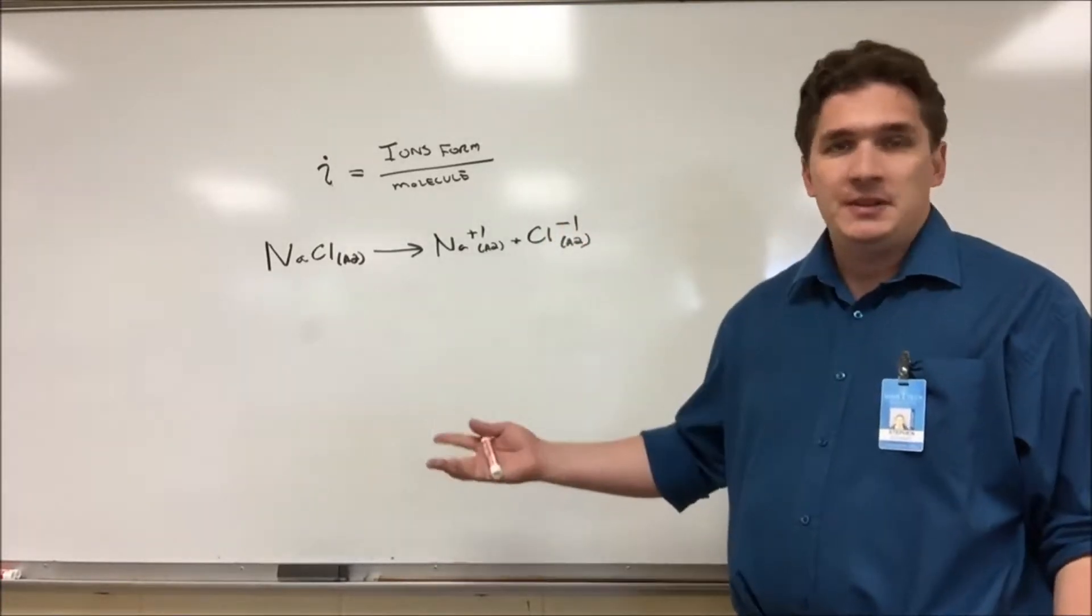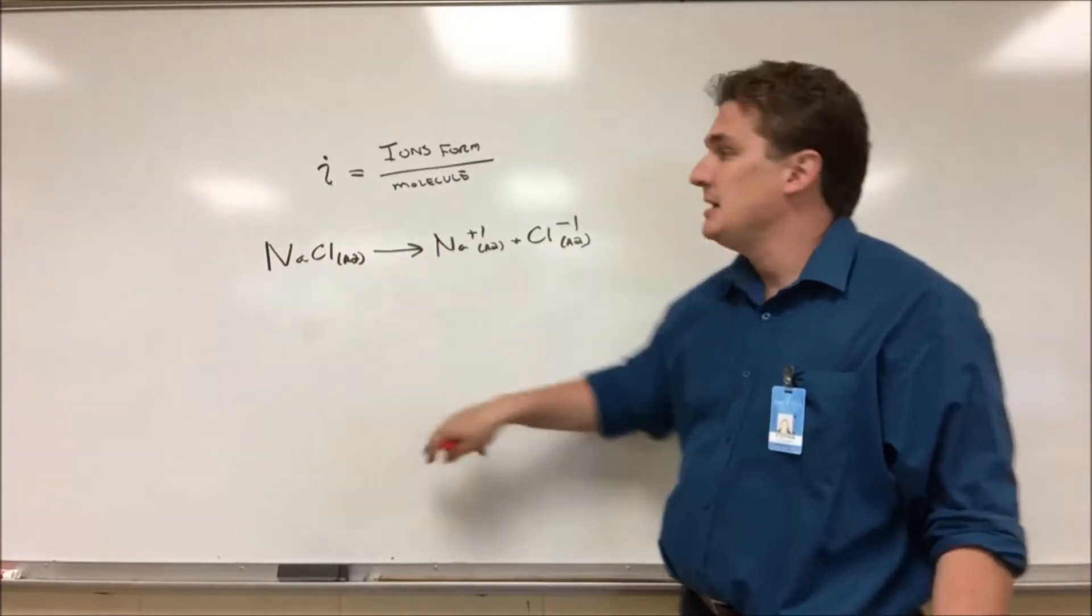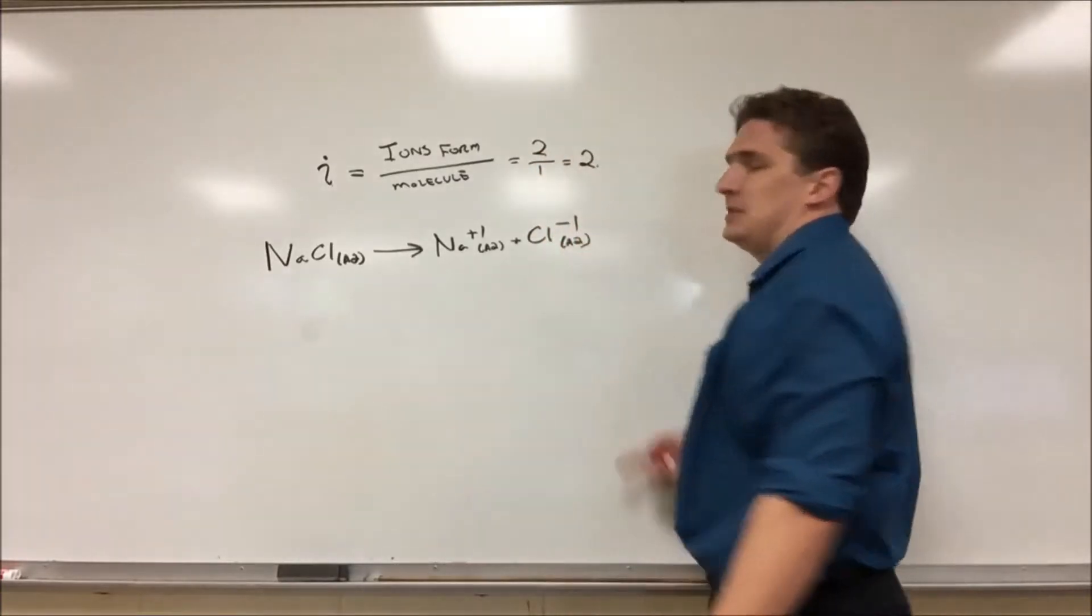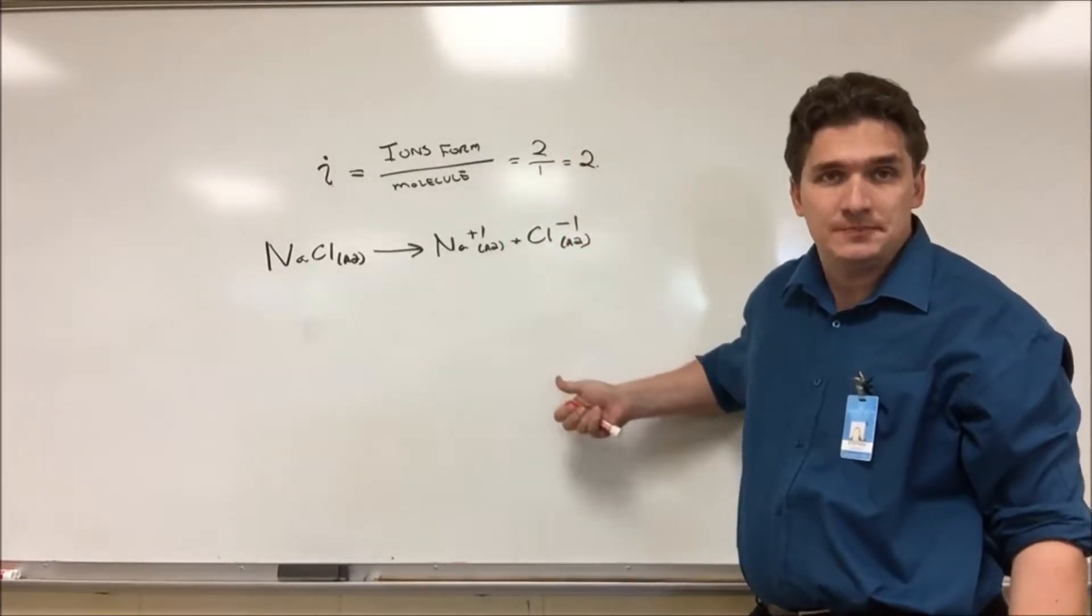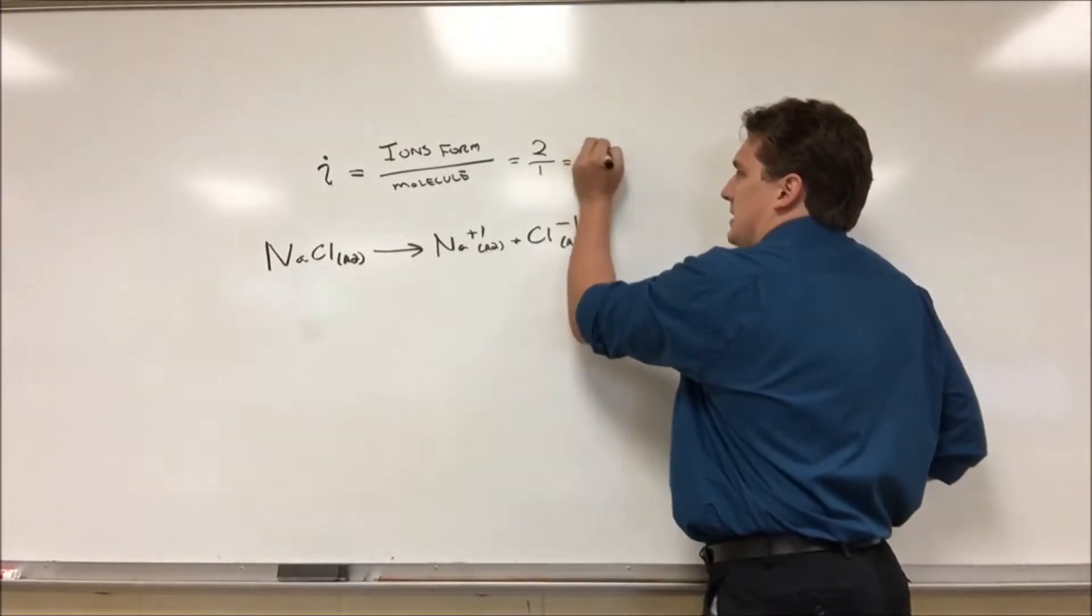So you would infer then that if it's the number of ions over the number of molecules, we have one molecule of NaCl, we have two ions, so this should be two over one. We should get two. The Van't Hoff factor for sodium chloride is two. Well, in reality, it's actually 1.9.